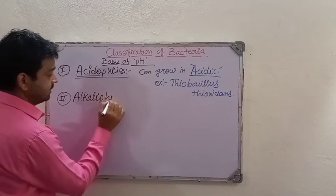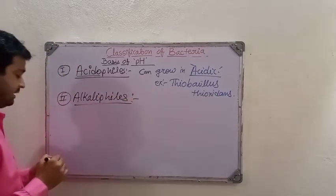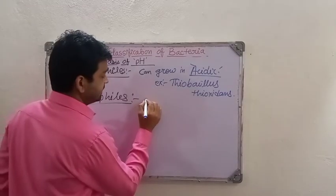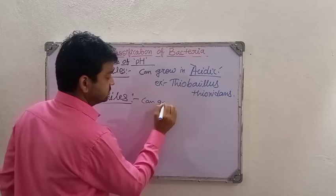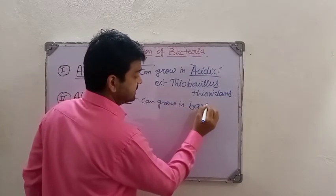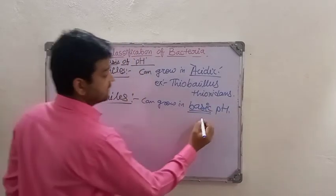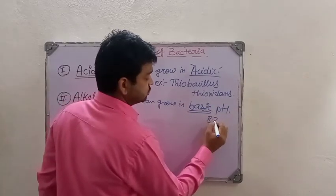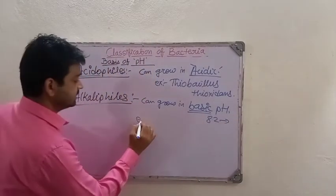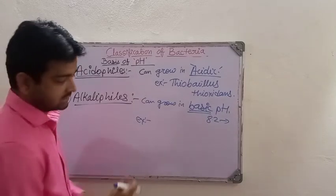Alkaliphiles — as the name indicates, alkaline means basic. So alkaliphiles can grow in basic pH, they require a basic environment, like pH 8.2 and above. The example we can write here for alkaliphiles in basic pH is Vibrio cholerae.